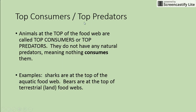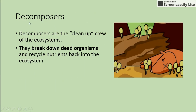We also have top consumers, which are also called top predators. These are at the top of the food web — they don't have any natural predators, meaning nothing else consumes them. Some examples are sharks at the top of the aquatic food web and bears at the top of the terrestrial, or land, food web.